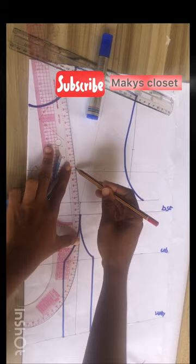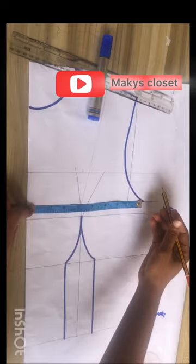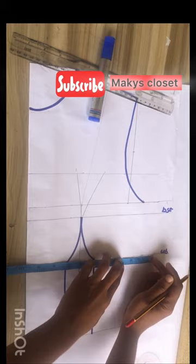Now I will be marking my bust side circumference. Mark the dart intake and add my sewing allowance. Also repeat it at the under bust, replace your dart intake, and add your sewing allowance.